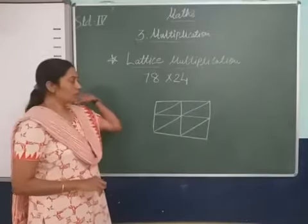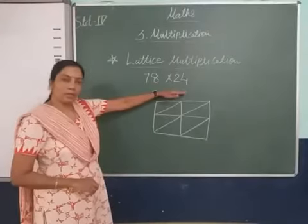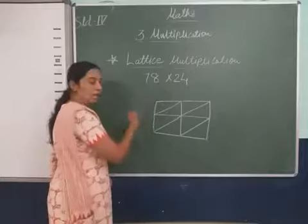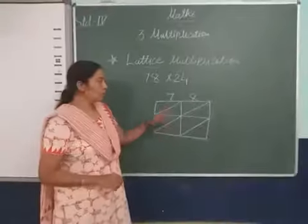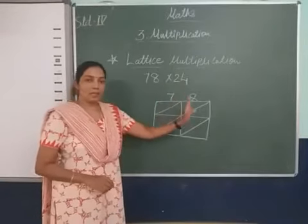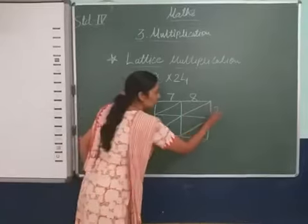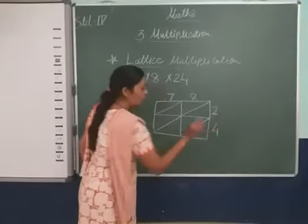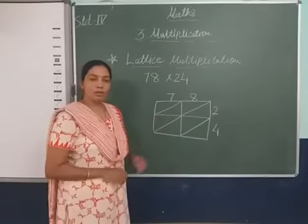Now what the next step is? Always write the multiplicand on the top side of the lattice. So 78, we will write here 7 and 8. Now the multiplier 24, we will write on the left side of the lattice: 2, 4. Now let me find out the product. The product we will put on the diagonal.